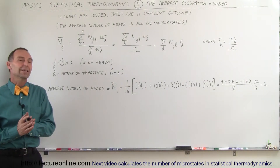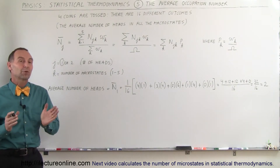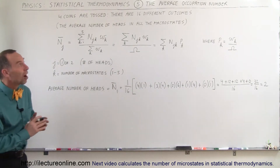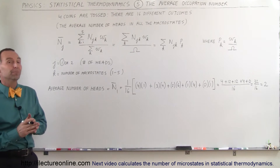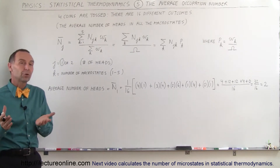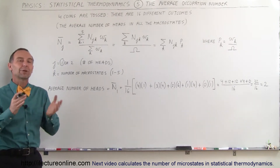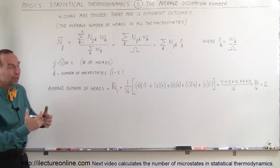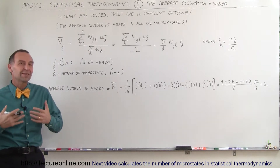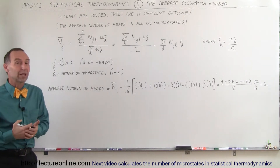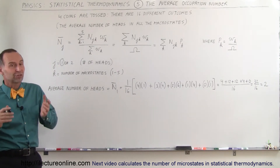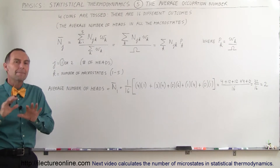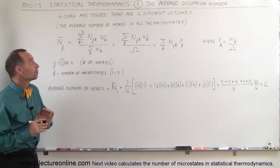Welcome to Electron Online. Now we're going to explore something called the average occupation number. We're going to lean on our previous experiment where we had four coins — we tossed them and there are 16 different possible outcomes, therefore 16 microstates, and a total of five macrostates.